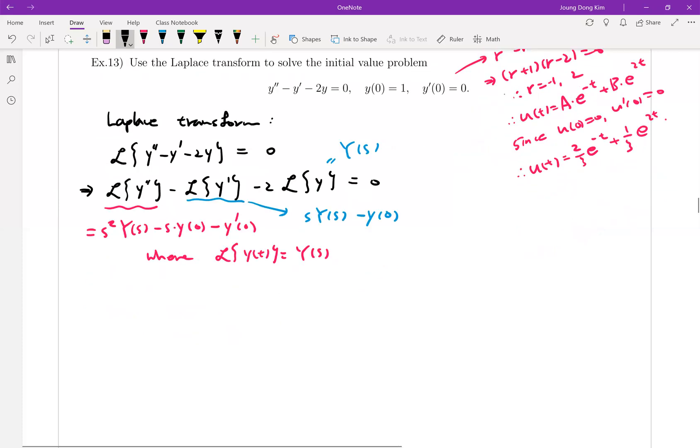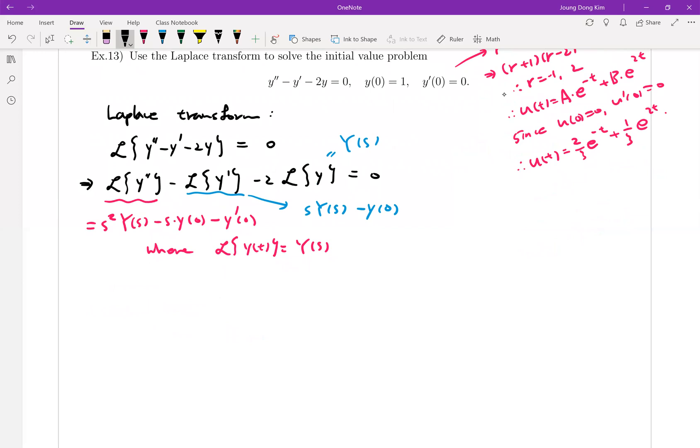Let me change everything in terms of y over s. This will be s squared y s minus s times y zero was zero. Y zero is one. And minus y prime zero equals zero. And minus s y s and plus y zero which is one. And minus two y s equals zero. And take all y s term together.